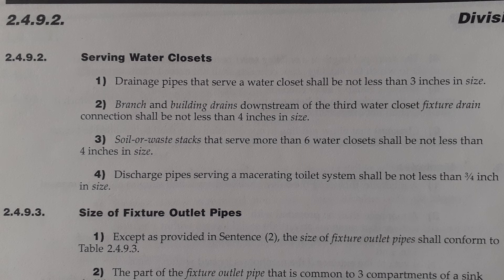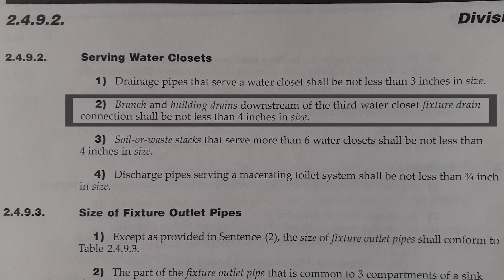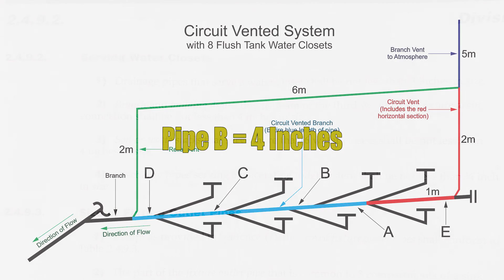Now we have a code clause to apply here. Clause 2-4-9-2 part 2 states that branch and building drains downstream of the third water closet fixture drain connection shall be not less than 4 inches in size. Therefore, pipe B by this clause needs to be 4 inches.